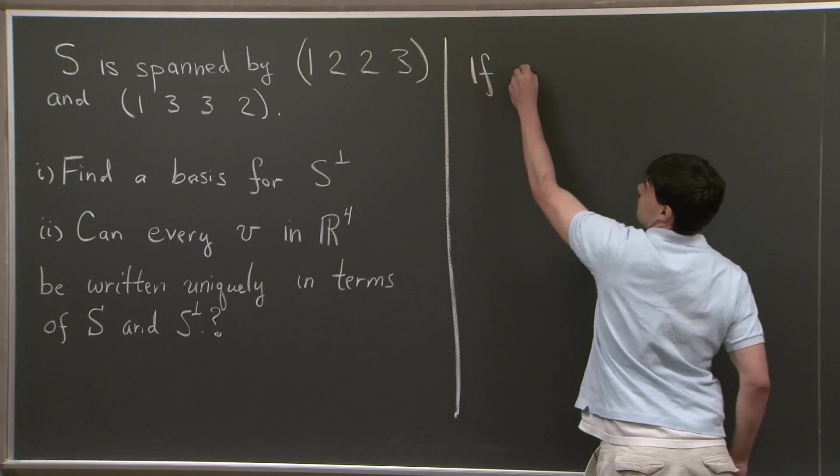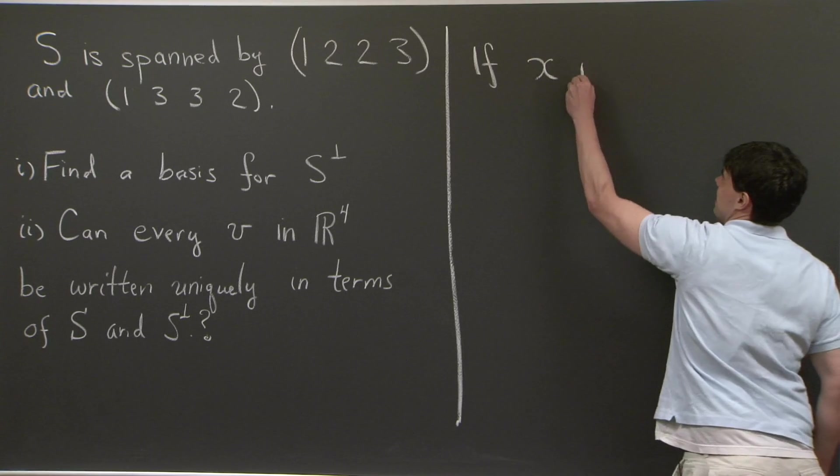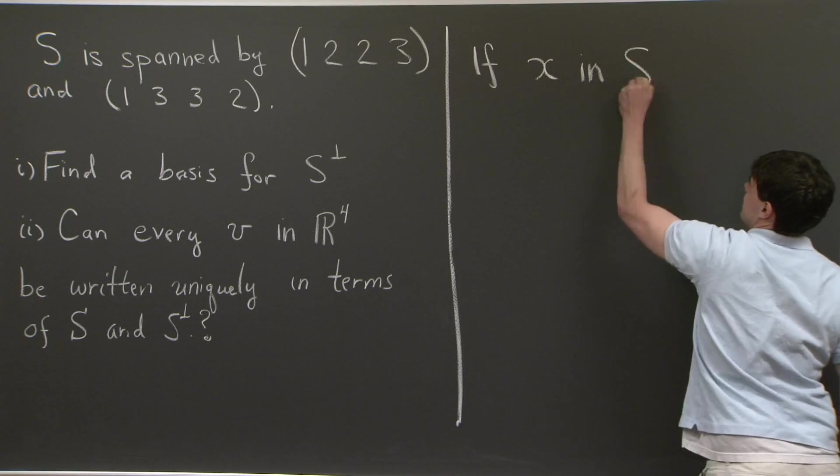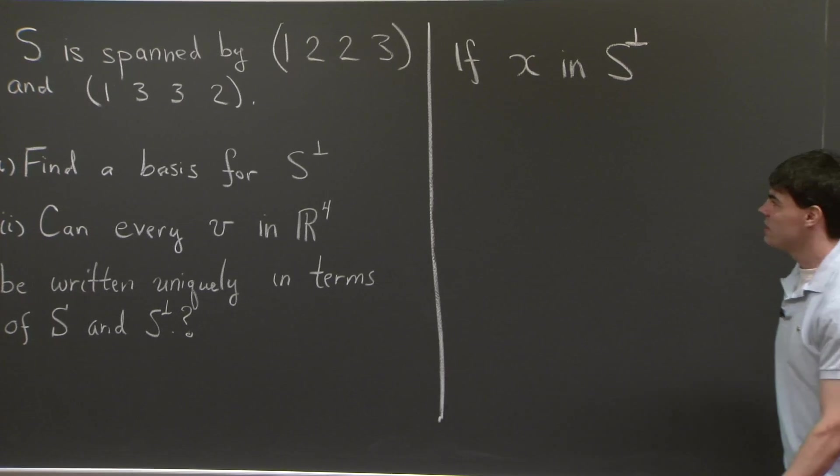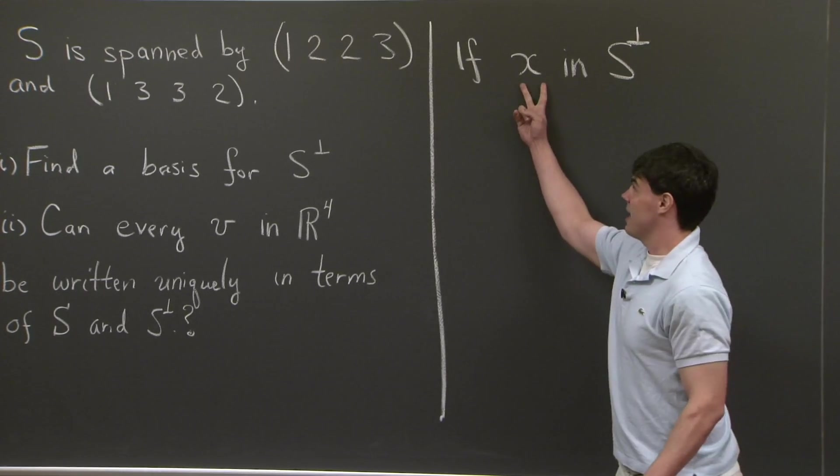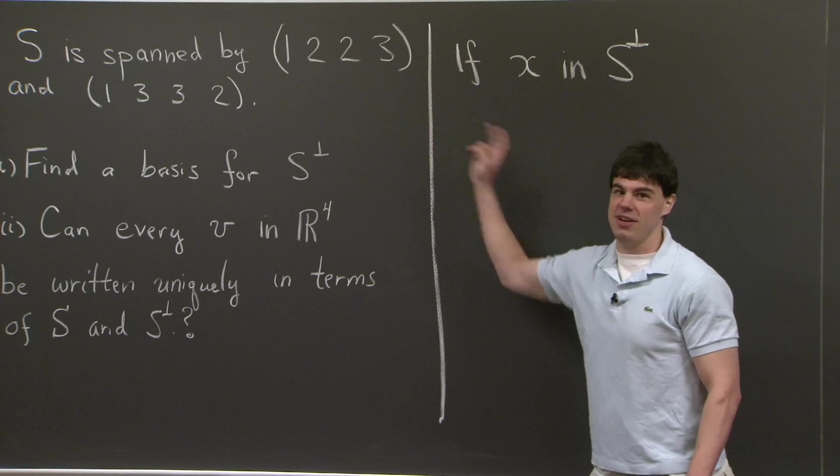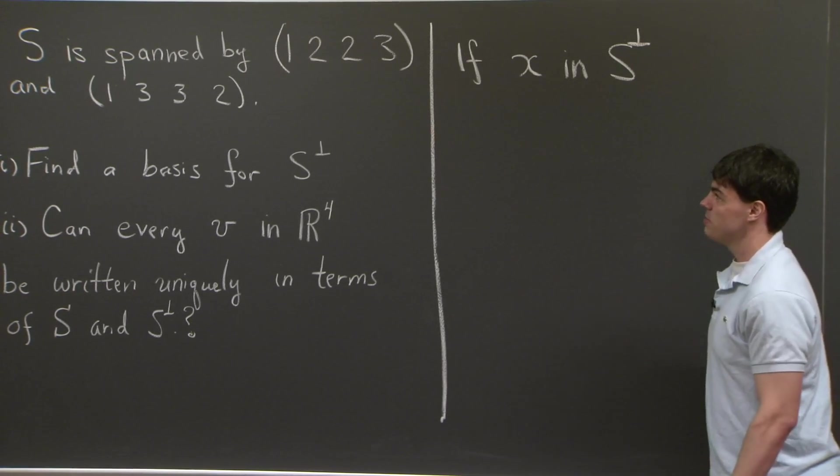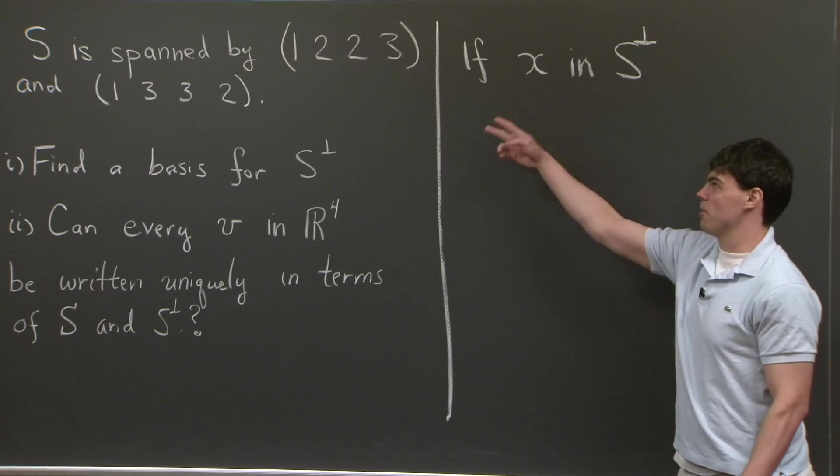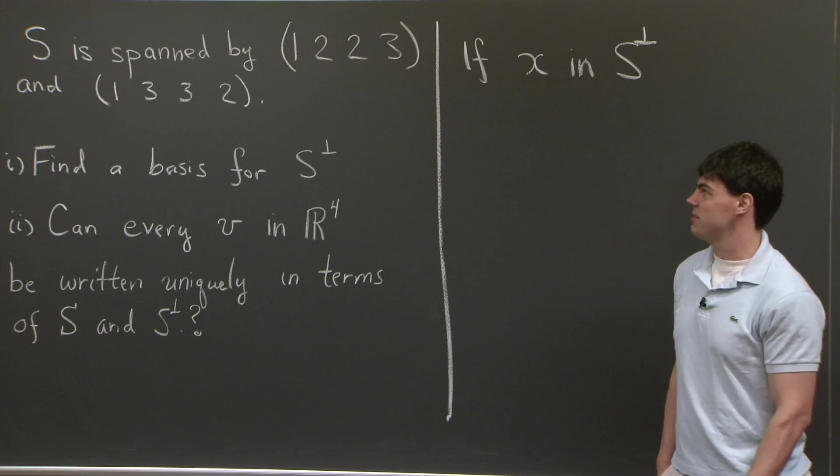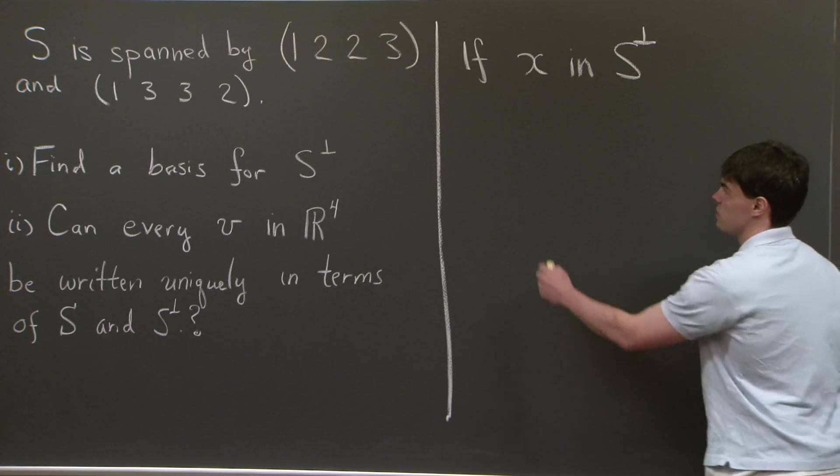Well, if I have a vector x in S perp, what this means is x is going to be orthogonal to every vector in S. Now, specifically, S is spanned by these two vectors. So it's sufficient that x be perpendicular to the two basis vectors in S.